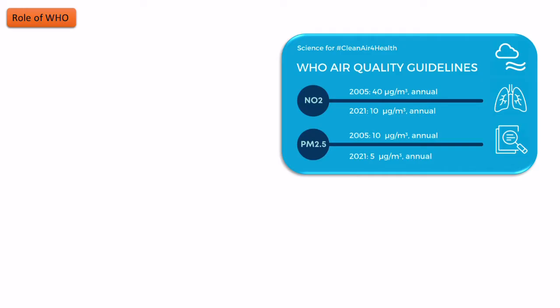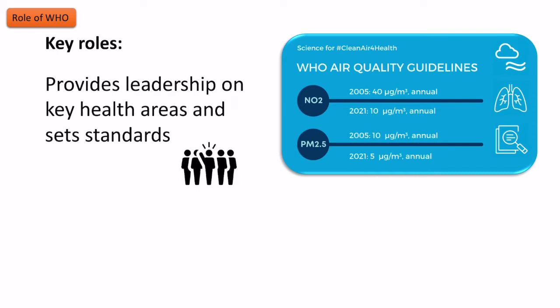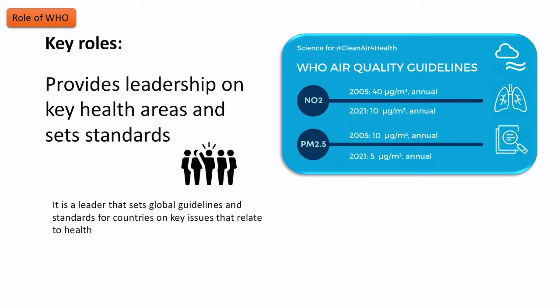One of the obvious ways WHO is important globally in terms of public health is that it's a leader in setting standards, but also it directs the world's attention to certain key areas relating to health. It will often set out guidelines or standards for countries to try and meet on key health issues. For example, they currently consider 10 micrograms per metre cubed of particulate matter to be a safe air pollution level — a guideline coordinated by WHO experts and then set out to countries.